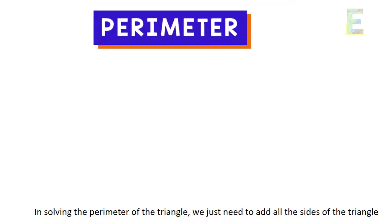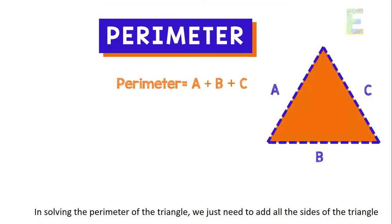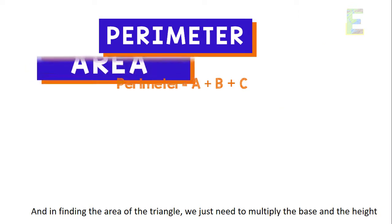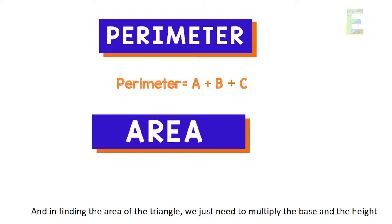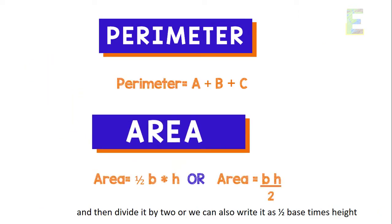In solving the perimeter of the triangle, we just need to add all the sides of the triangle. And in finding the area of the triangle, we just need to multiply the base and the height and then divide it by 2. Or we can also write it as 1 half base times height.